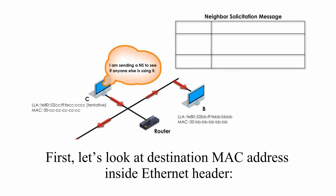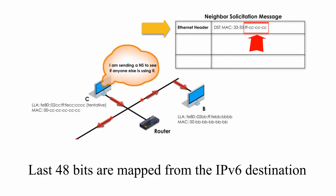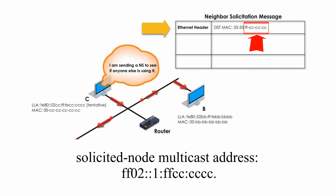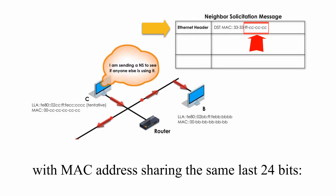First, let's look at the destination MAC address inside the Ethernet header. 33-33 is prefixed for Solicited Node Multicast. The last 48 bits are mapped from the IPv6 Destination Solicited Node Multicast address. This packet is only listened to by any other device with a MAC address sharing the same last 24 bits.